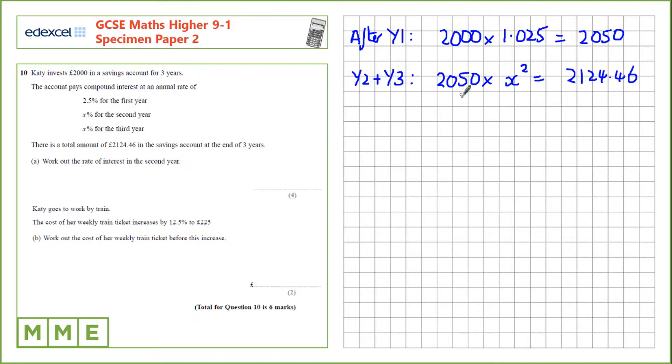Now, let's divide by £2,050. So, that gives us x squared is this value divided by £2,050, which is 1.036. And if we take the square root, we find that's 1.01799.